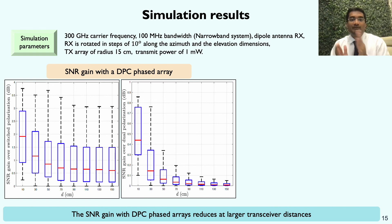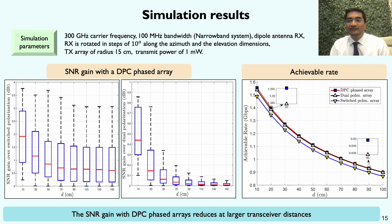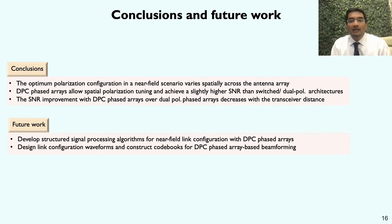At longer distances the improvement of DPC over dual polarization is negligible because the optimal polarization angle is spatially invariant at large distances, and so a dual polarization architecture suffices in that region. Looking at achievable rate, the DPC phased array achieves slightly higher rate than the benchmark architectures. In summary, the optimum polarization configuration varies spatially across the array in the near field, motivating the use of DPC phased arrays, which are shown to outperform standard phased arrays at short distances.